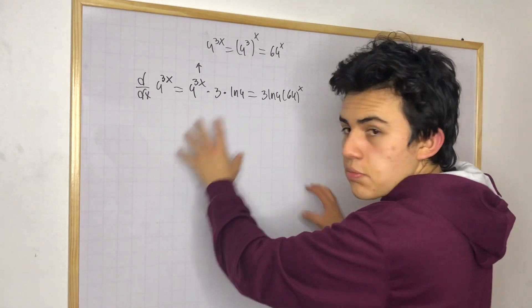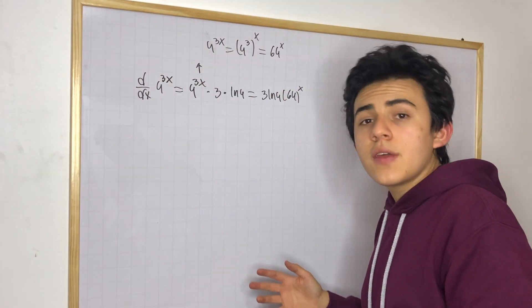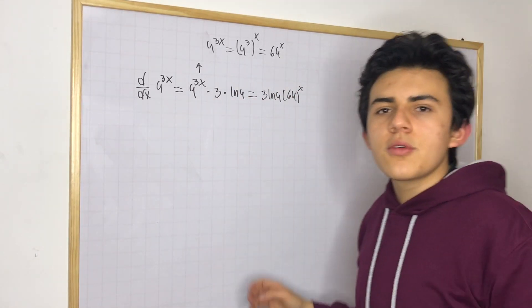Sometimes, when you have these problems, try not to leave any coefficients in the exponent, if it is possible. If you have this, try to simplify it to something like this. Now, let's do one more example.